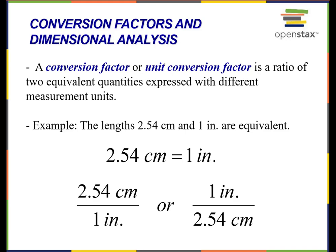That equality allows us to create two conversion factors. We could either say we have 2.54 centimeters per inch, or it's just as true to say one inch per 2.54 centimeters. Depending on our situation and what the problem calls for, we could use either of these conversion factors to convert between inches and centimeters. If given a value in inches and wanting to convert to centimeters, we would use the first conversion factor.